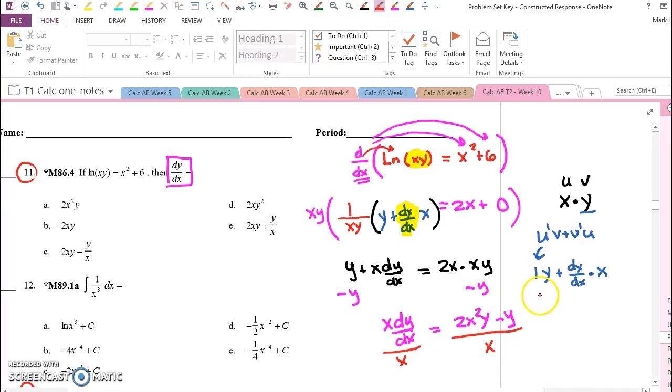Now dy/dx is all by itself. If you think about dividing each term separately, this x will cancel with one of those x's. And we are left with 2xy minus y over x, which should be c.